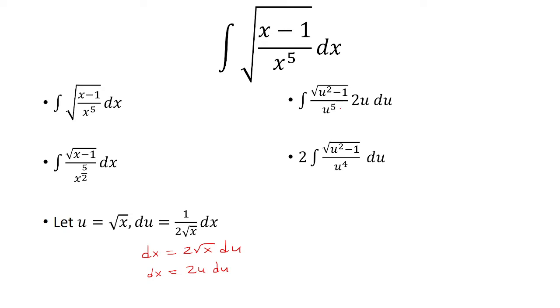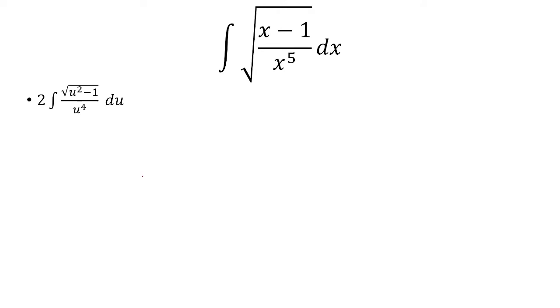Now I bring the 2 outside. u over u to the 5th is just u to the 4th. We're going to make a trick substitution next. We'll let u equal secant theta. So du is secant theta times tangent theta d theta. So we have secant squared minus 1 over secant to the 4th power. And then we're going to multiply that by secant times tangent times d theta.